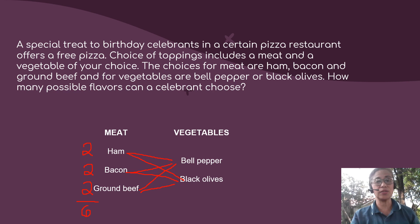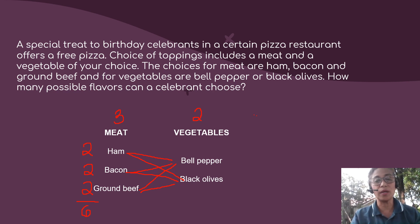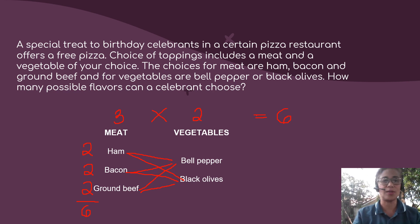If you notice, you can come up with a shorter solution instead of listing and diagramming. From my example, for meat you have 3 choices, and for vegetables you have 2 choices, and we came up with 6 different flavors. So the shorter way is to simply multiply the first option by the second option: 3 times 2 gives you 6 options.